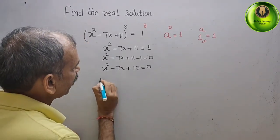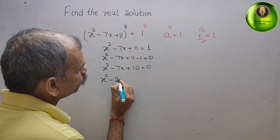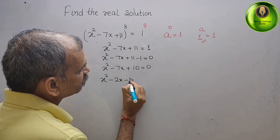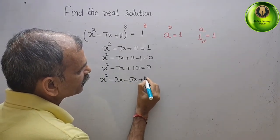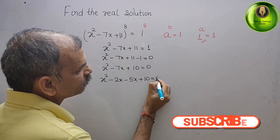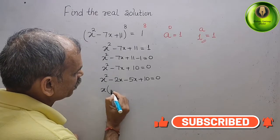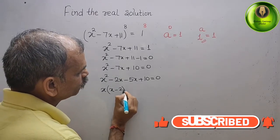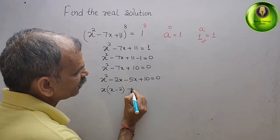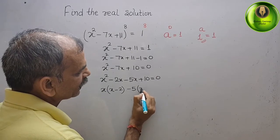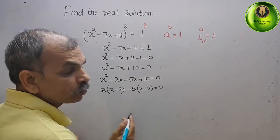So we will write it as x square minus 2x minus 5x plus 10, that gives you 0. Take the common, x is common, you will get x minus 2. Here, 5 minus 5 is common, you will get x minus 2, that is equal to 0.